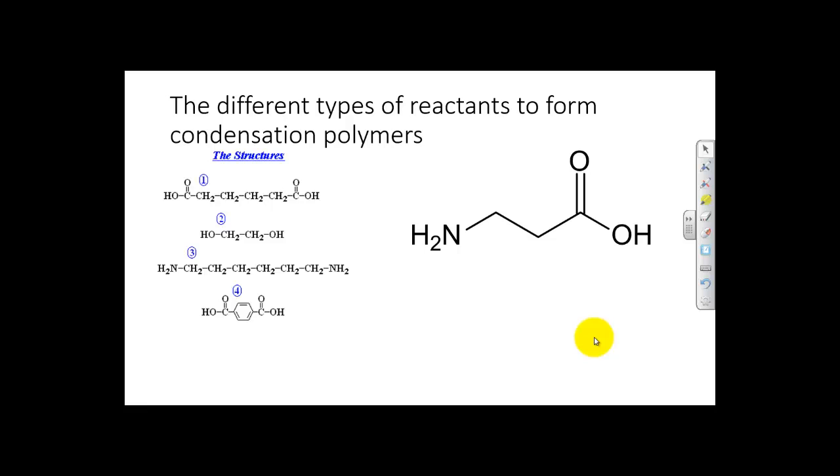So these are the different reactants we can use to form condensation polymers. We can have a dicarboxylic acid with a diol. We can have a dicarboxylic acid with a diamine. So that's something with a carboxylic acid at both ends and something with an alcohol at either end or a carboxylic acid at either end and an amine at each end. And you can see for this one there, the carboxylic acid is non-negotiable. Or we could have an amino acid.